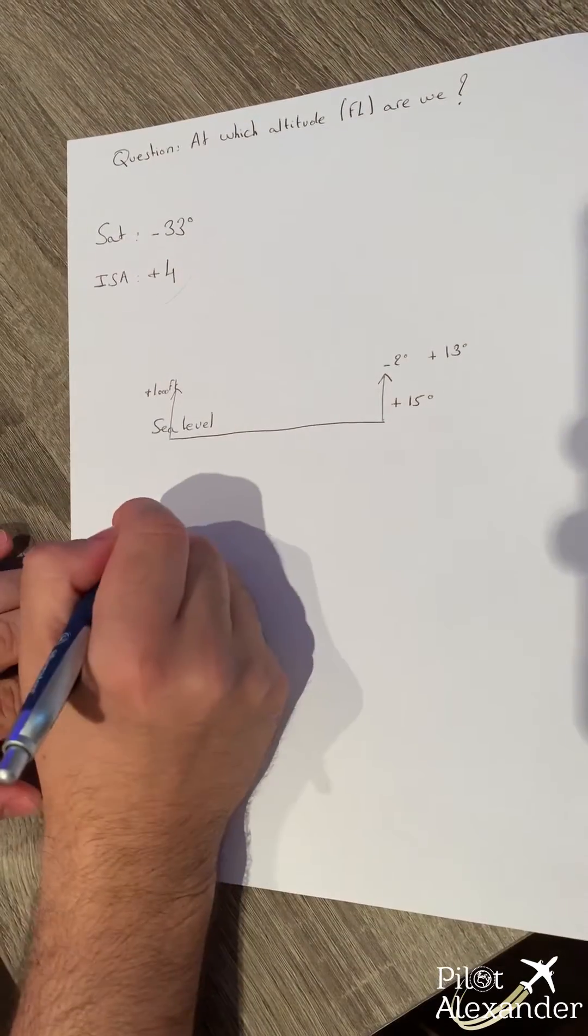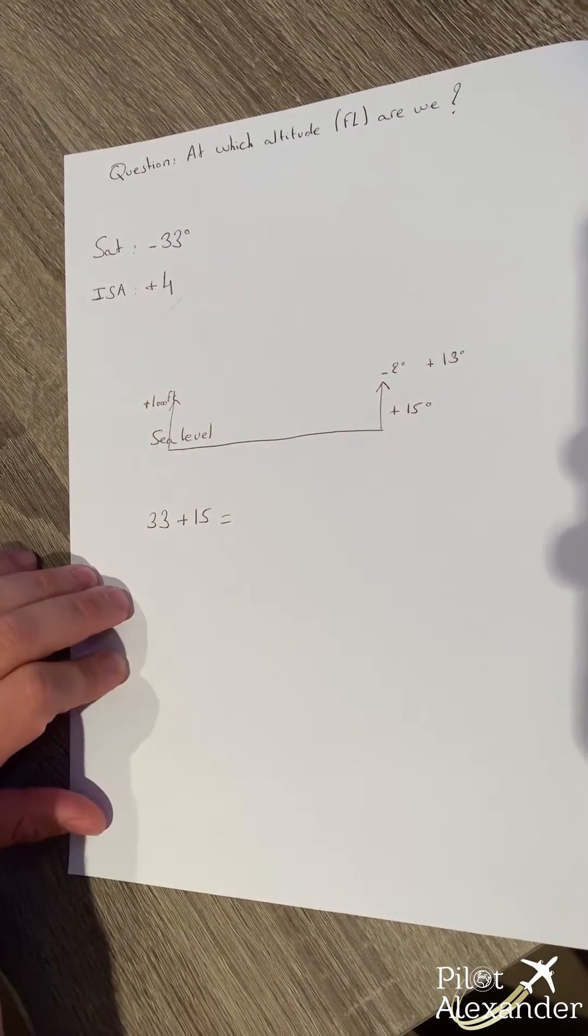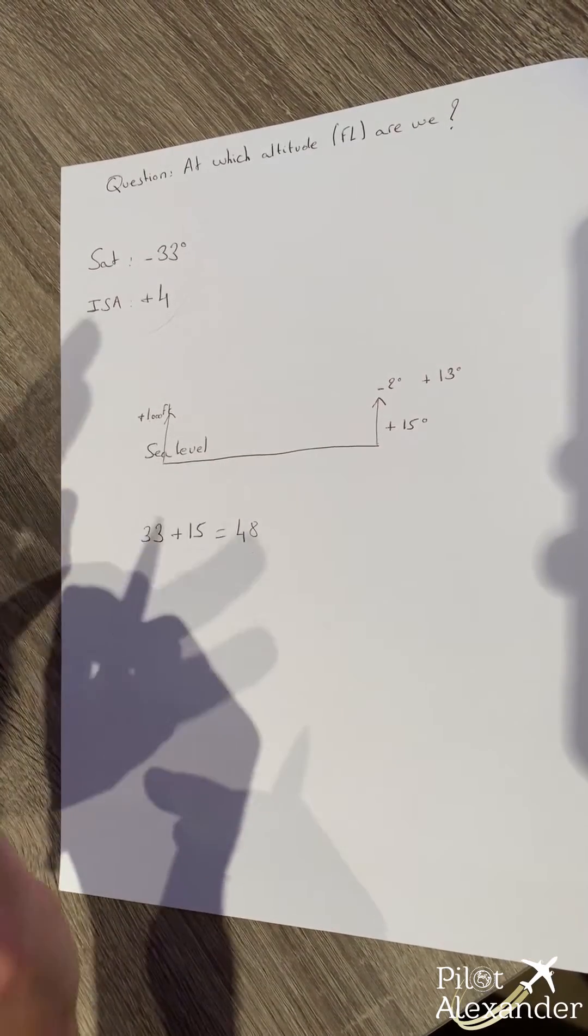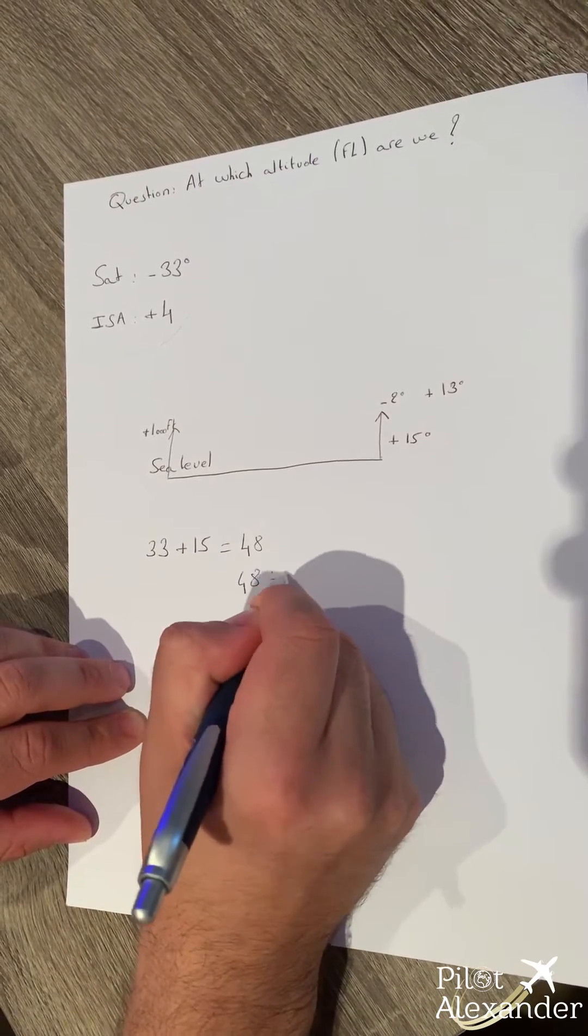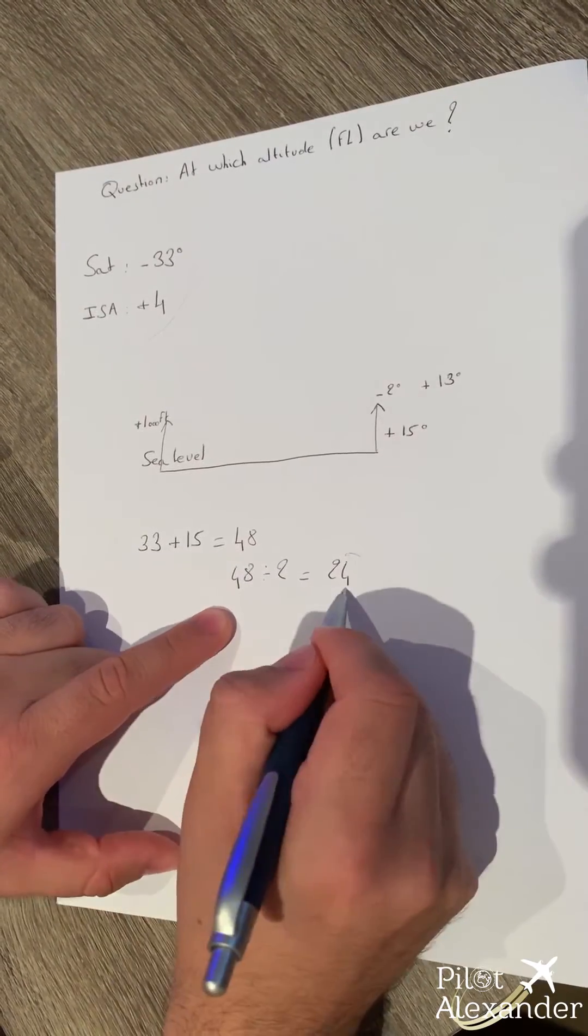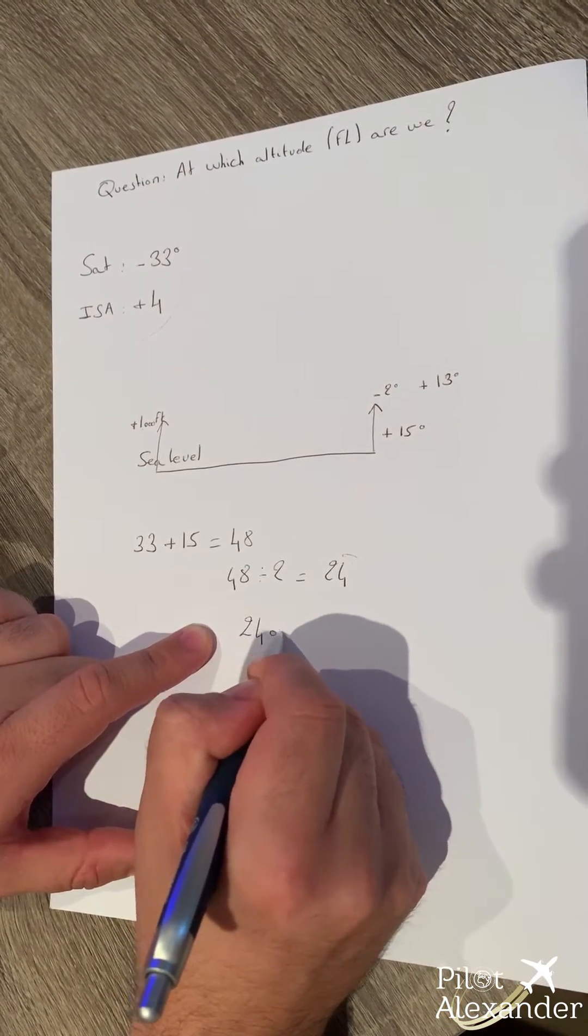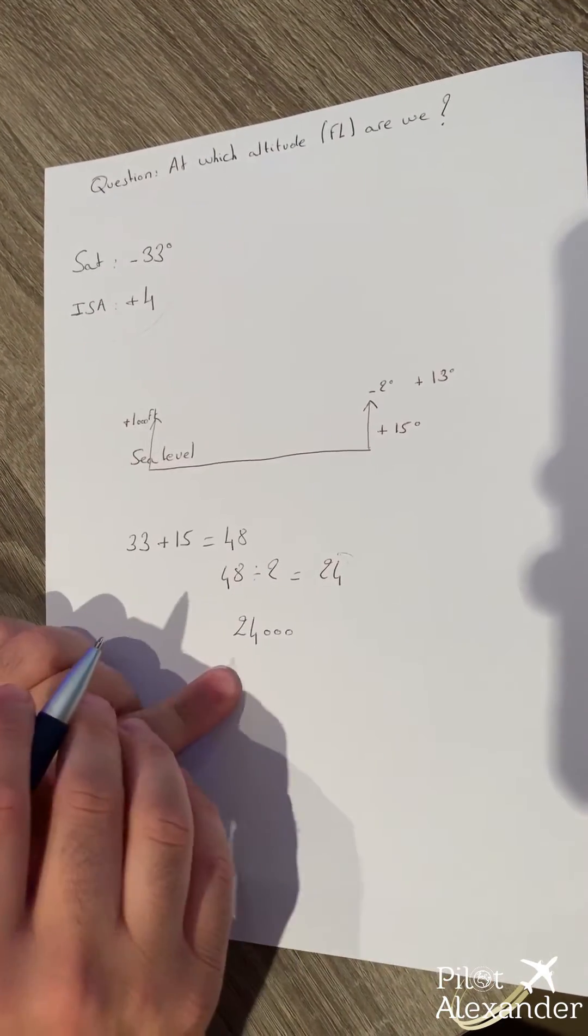So that's the easiest way. 33 plus 15, that's 48. Now we know that it's two degrees per thousand. So we divide 48 by two, makes it 24. 24 times 1,000 makes it 24,000. At minus 33 degrees, it's 24,000.